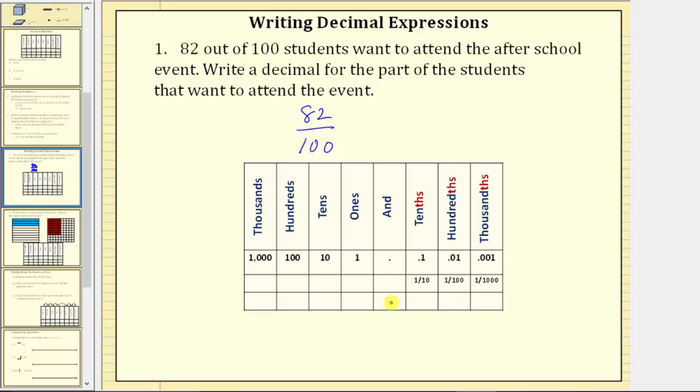In this column, we have the decimal point. To the right, we have the tenths place value, then the hundredths place value.